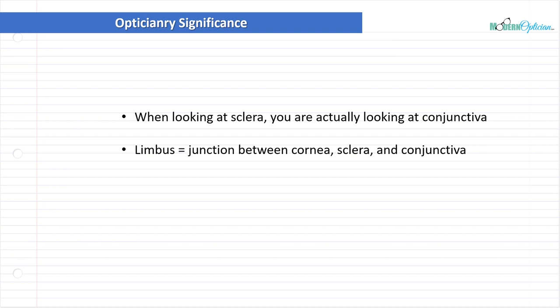Remember the limbus, right? The junction between the cornea, sclera, and the conjunctiva. This is an important spot that you need to know as an optician because we are going to refer to the limbus over and over again in fitting bifocals, in fitting contact lenses. It's just one of those reference points that is commonly used. So make sure you're quite familiar with where the limbus is. Fortunately, it's pretty easy to remember where that is.